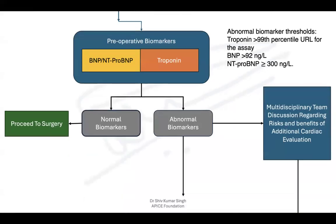If further testing can help decision-making, we look at preoperative biomarkers — typically NT-proBNP, and we can also measure troponin levels. Abnormal biomarker thresholds are: troponin above the 99th percentile of the normal reference range for the assay, BNP more than 92 ng/L, or NT-proBNP greater than or equal to 300 ng/L. If biomarkers are normal, we can proceed to surgery, with the elevated risk explained to the patient. If biomarkers are abnormal, we return to the MDT to discuss the risks and benefits of additional cardiac evaluation.